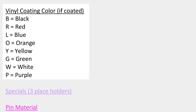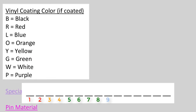Next, we move on to the vinyl coating. There is one space allocated to this attribute in place holder number 10. If the handle has a smooth jacket on it — which is usually done via dipping the pin in a liquid that hardens — we would specify the color of the jacket here. If there is no jacket, we use a dash.